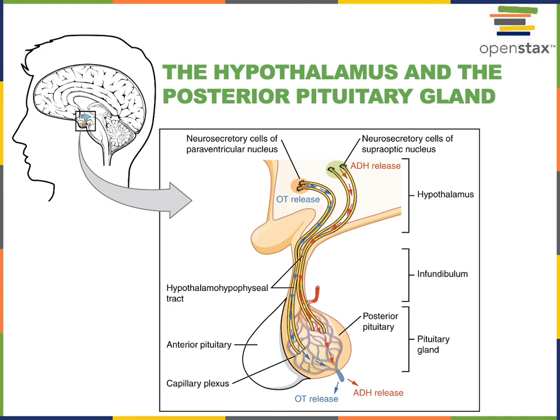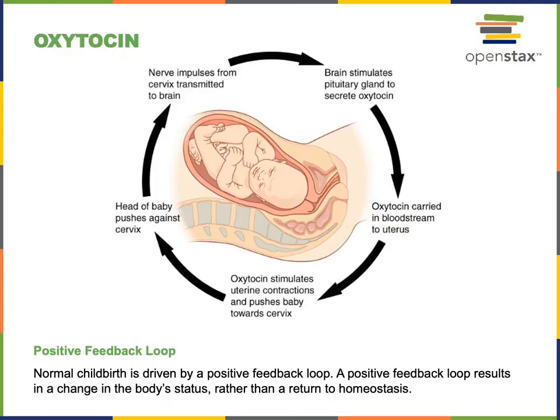Oxytocin and antidiuretic hormone have different target cells and stimulate different functions. Here we see an illustration showing the function of oxytocin in a positive feedback loop that stimulates contraction of the uterine smooth muscle during childbirth. This starts with the head of the baby pushing against the cervix, and as the cervix is stretched, a nerve impulse relays that information into the brain.